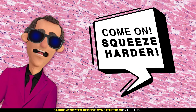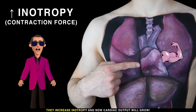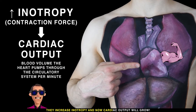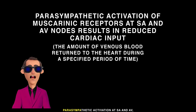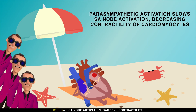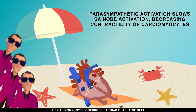Cardiomyocytes also receive sympathetic signals, which increase inotropy so that cardiac output grows. Parasympathetic activation at the SA and AV nodes results in reduced cardiac output — it slows SA node activation and dampens the contractility of cardiomyocytes, reducing cardiac output.